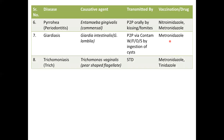The eighth one is trichomoniasis, commonly called trich, caused by the protozoan Trichomonas vaginalis. It is a flagellate that is pear-shaped and is transmitted through sexual contact. The drugs metronidazole and tinidazole can be used against it.